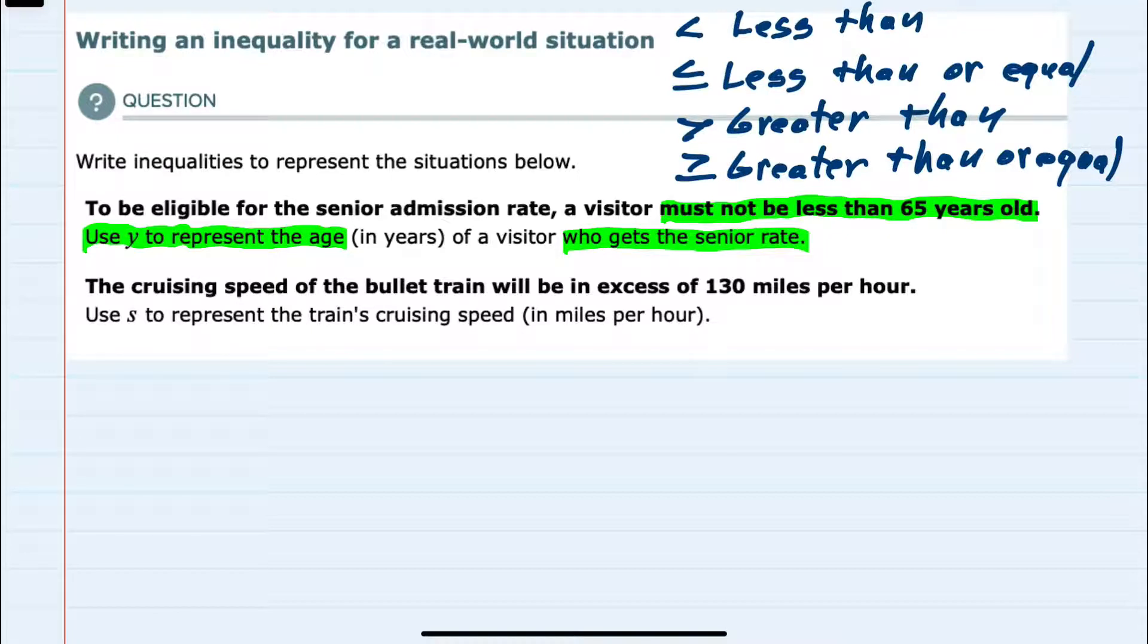So seniors must not be less than 65 years old. So the age, y, must not be less than 65 years old.